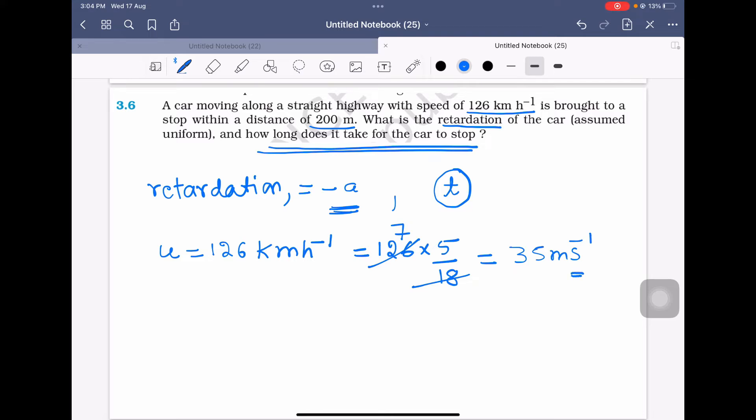We have to calculate retardation. Since finally the car stops, final velocity is 0. We know the final velocity and initial velocity. Time we do not know. We know the stopping distance. Stopping distance is 200, x equals 200.